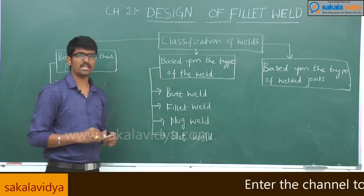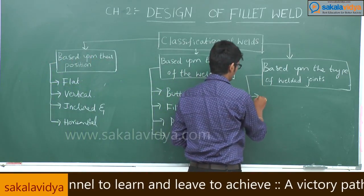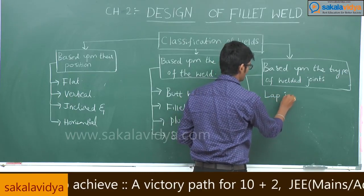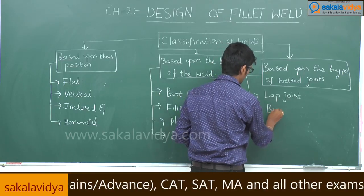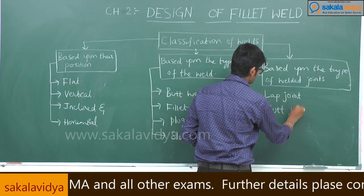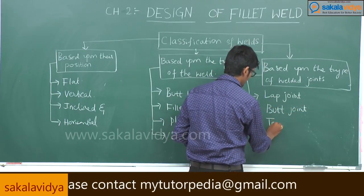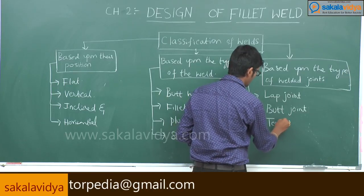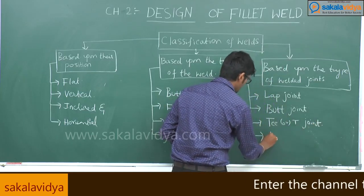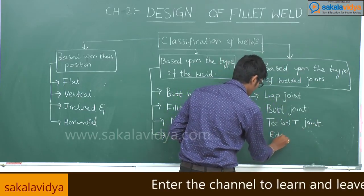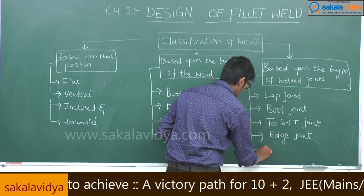Based upon the type of welded joint, the types are: lap joint, butt joint, T joint, edge joint, and corner joint.